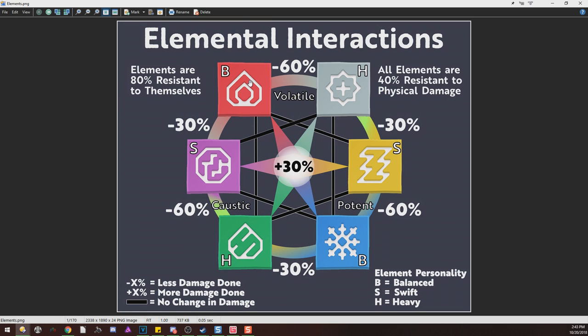Jumping into this chart, a couple of things that are good to know: elements are 80% resistant to themselves. So naturally, you're not going to want to use a Burn or Ruby sling bow against a burning creature because they're going to resist it 80% of the time. Not good. On the flip side, all elemental creatures also have a 40% resistance to physical damage.